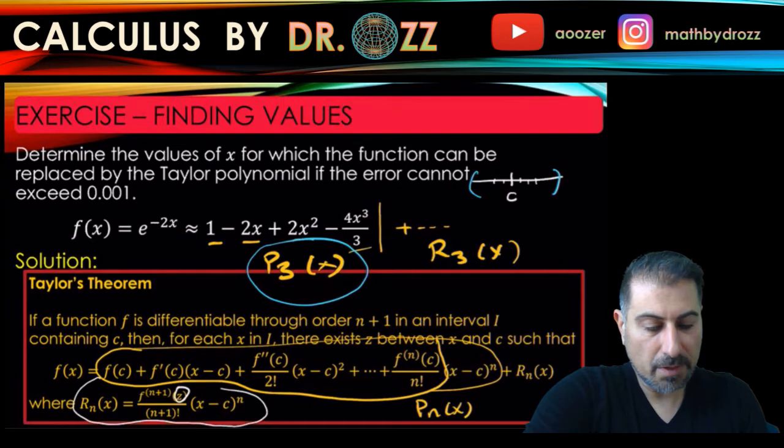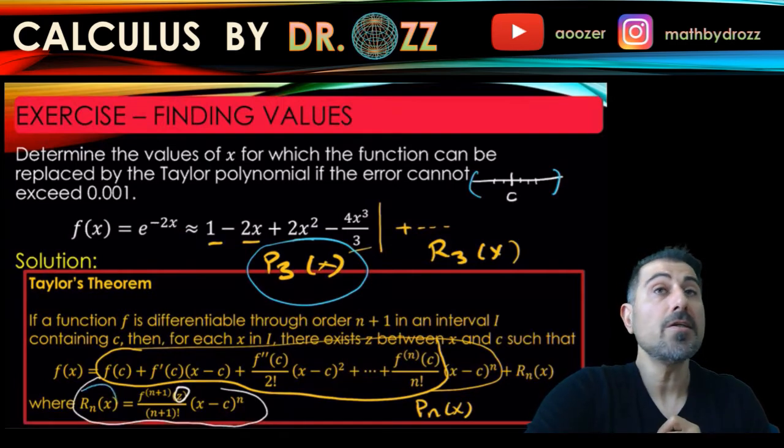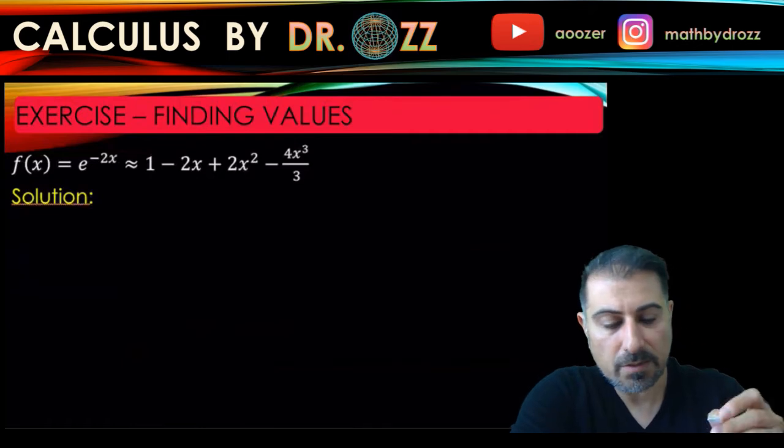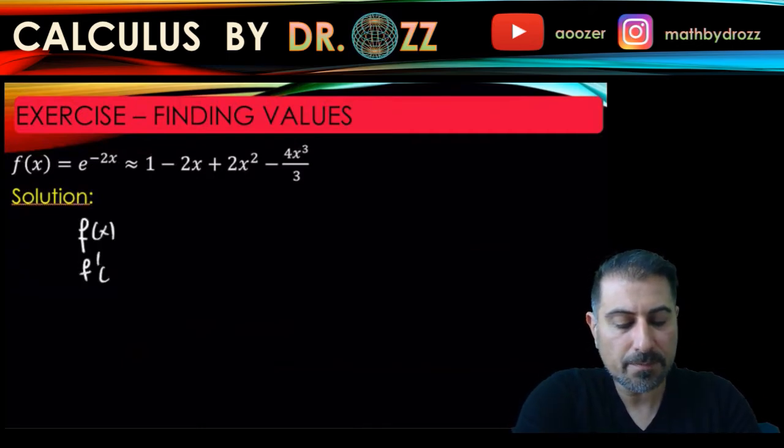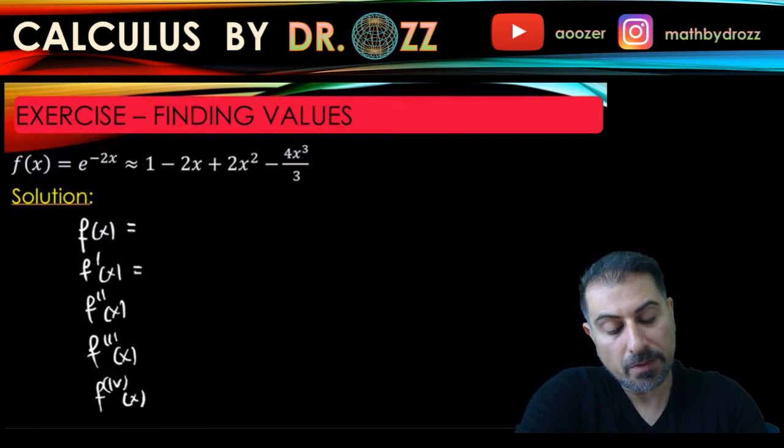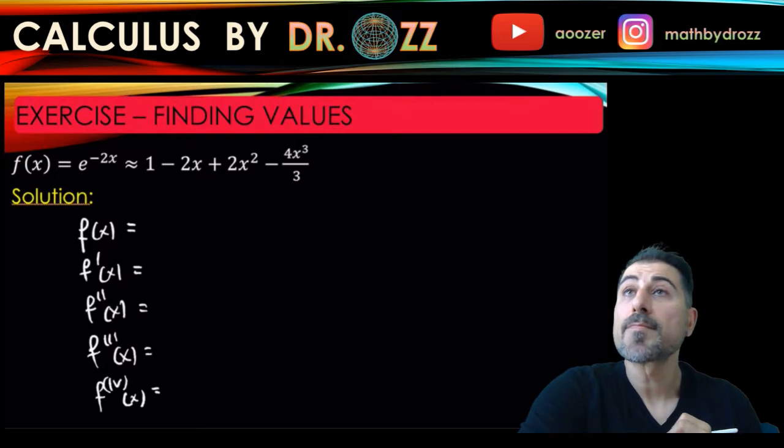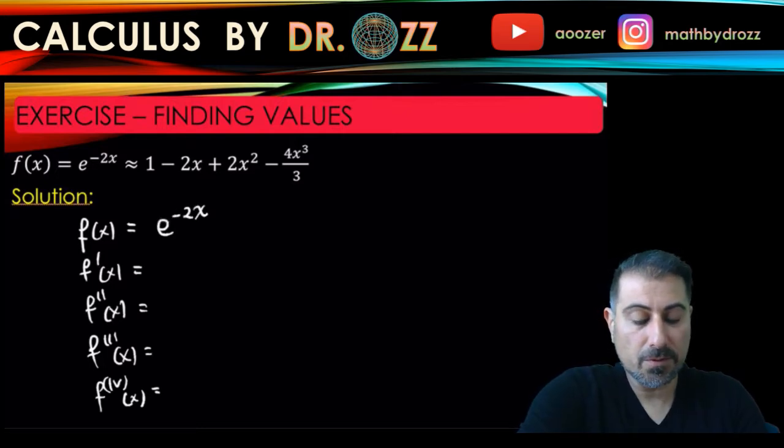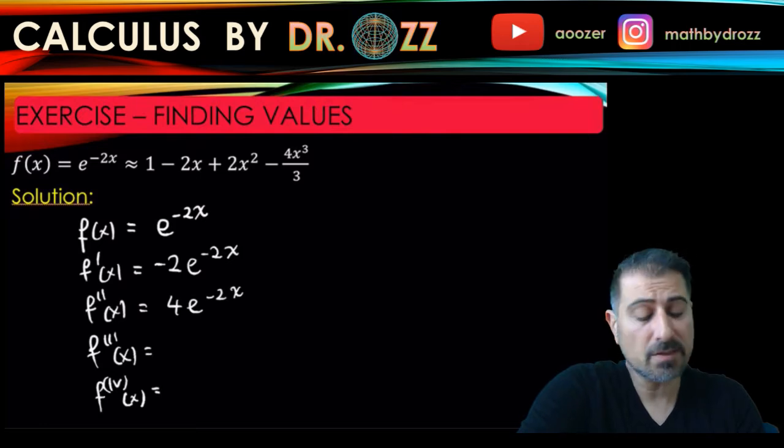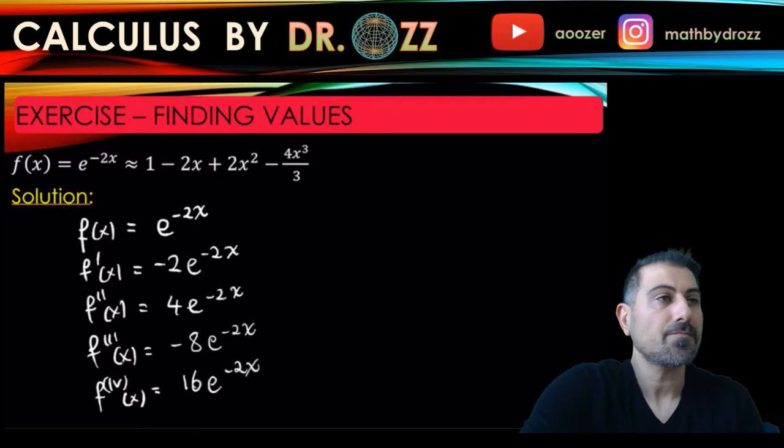Well, first of all, I don't need the Taylor polynomial because it's already written. But since I need the description of Rn here, and in fact for n equals 3, that means I need to go to the fourth derivative here. So I need the fourth derivative of the function. So why the fourth derivative? Because when you write R3, fourth derivative is needed. So f of x equals e to the minus 2x. The first derivative is negative 2 e to the minus 2x. By the way, you can just pause the video and then find those derivatives with your own pace. So minus 8 e to the minus 2x and then 16 e to the minus 2x.